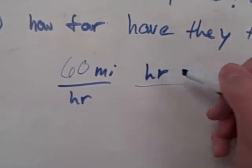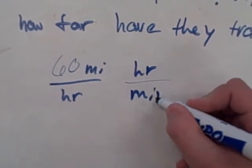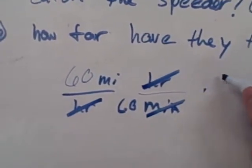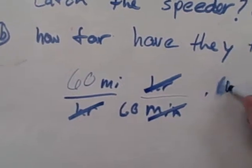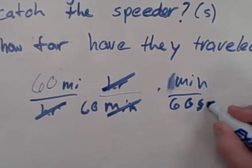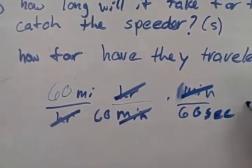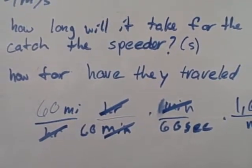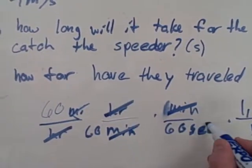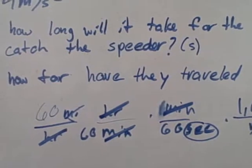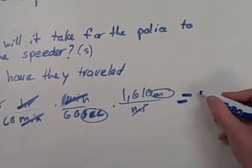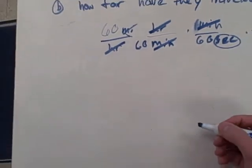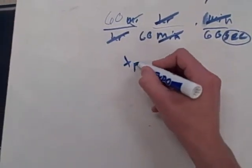You would cancel that out, then convert hours to minutes and minutes to seconds, and the minutes would cancel out. Then you would convert miles to meters and that cancels out. Then you are left with meters per second and that equals 26.833 meters per second.